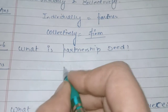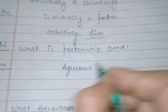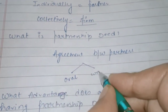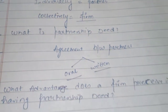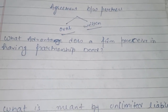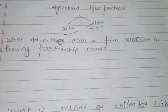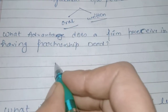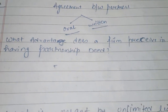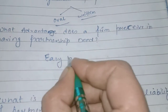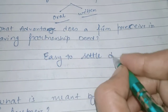Partnership is an agreement between the partners, and that agreement could be oral as well as written — both are possible. But it is preferable to have a written deed. What advantage does a firm perceive in having a partnership deed? If a firm has a written partnership deed, then when disputes sometimes arise among partners, it becomes easy to settle those disputes because everything is mentioned in the deed.